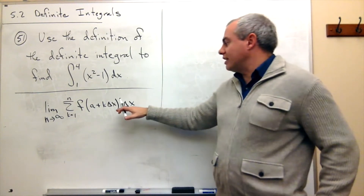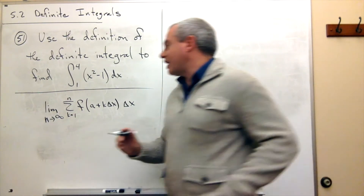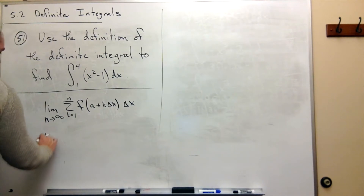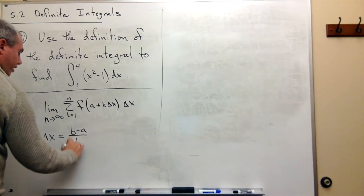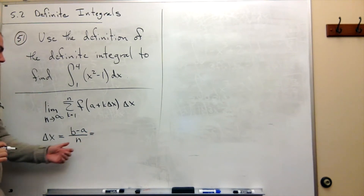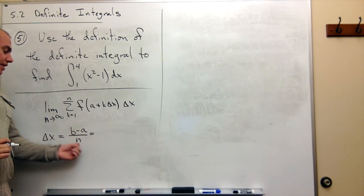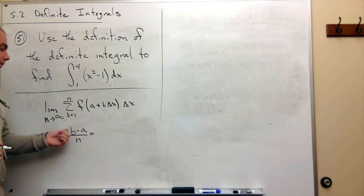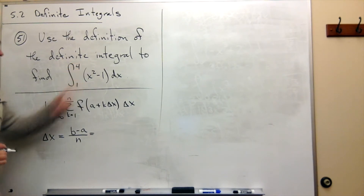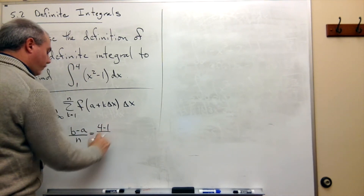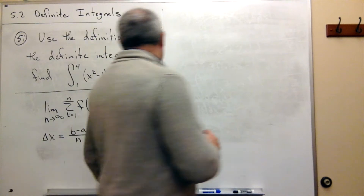The first piece of this puzzle is delta x. It shows up several times, and I need to know what delta x is. Delta x we know is b minus a over n — the length of the segment divided by the number of pieces I'm breaking this thing up into. b in this case is 4, a is the bottom number 1. So it's 4 minus 1 over n, in other words 3 over n. So we know what delta x is.